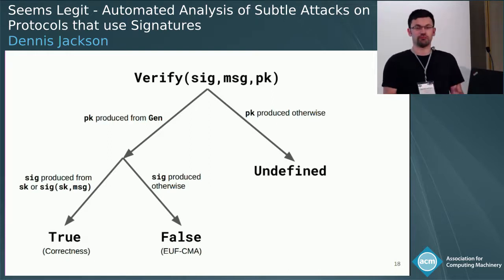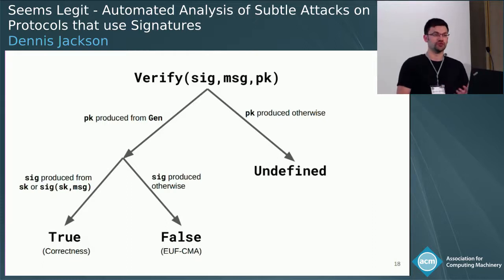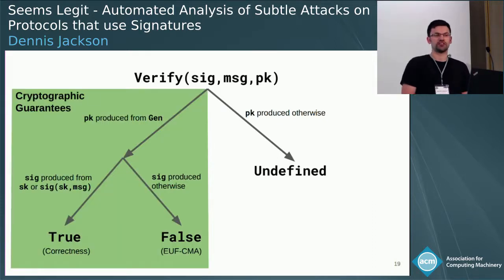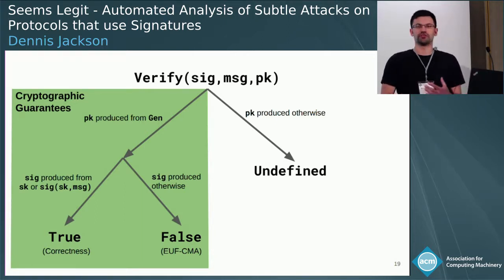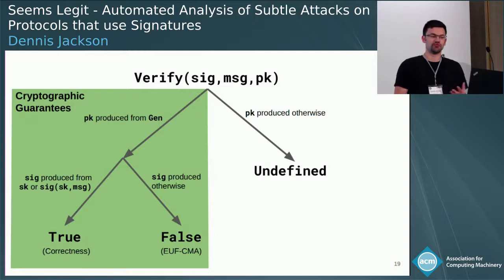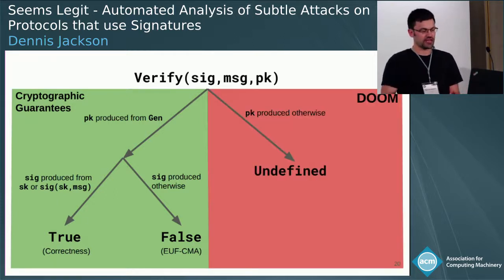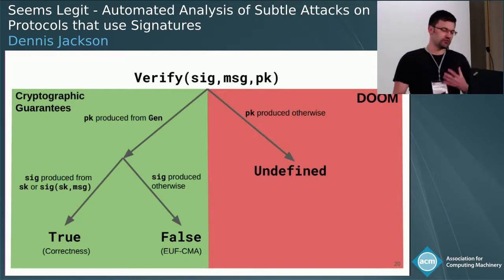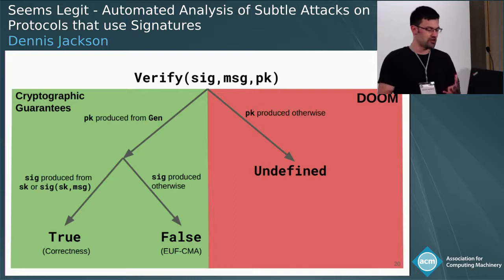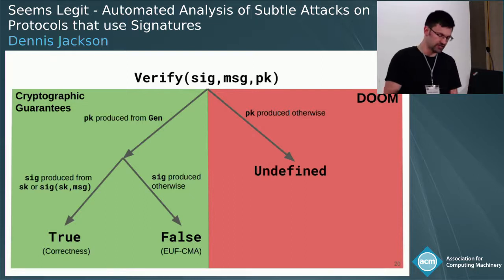What that means is that as a protocol designer, if you're on the left-hand side of this tree, you've got strong cryptographic guarantees that protect you from an attacker. But if you end up on the right-hand side, it's pretty much uncertain - you don't know, you have no protection. You can't do a computational proof at this stage; you have no protection from the security definitions. That's how these subtle behaviours relate to the security definition.